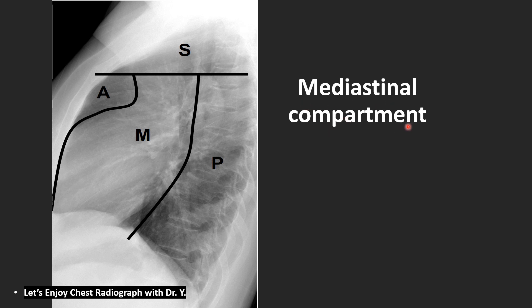Mediastinal compartment. Actually, there is no compartment in the mediastinum, because there is no diaphragm, no membrane which can divide anatomic locations. Just using the lateral film, we define middle, anterior, posterior, and superior. The most important standard one is the middle mediastinum, which represents the heart and the great vessels. In front of that is anterior, and behind that is posterior. We sometimes use the term superior mediastinum, above the manubriosternal junction or T4 level, but we sometimes do not use superior mediastinum.